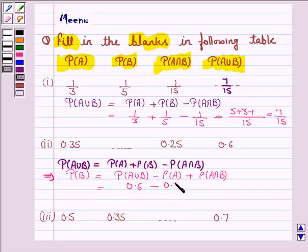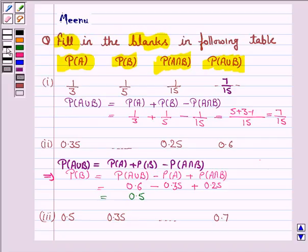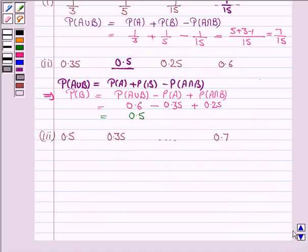Probability of A union B is given to be 0.6, minus probability of A which is 0.35, plus probability of A intersection B which is 0.25, and this is equal to 0.5. So the probability of B is 0.5.